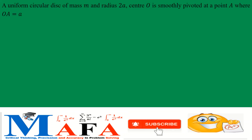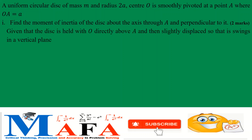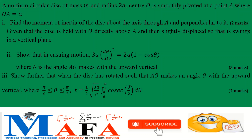The question reads: a uniform circular disk of mass m and radius 2a, center O, is smoothly pivoted at a point A where OA equals a. Find the moment of inertia of the disk about the axis through A and perpendicular to it. Given that the disk is held with O directly above A and slightly displaced so that it swings in a vertical plane, show that in the ensuing motion 3a(dθ/dt)² = 2g(1 − cosθ), where θ is the angle OA makes with the upward vertical. Show further that when the disk has rotated to angle θ, where θ lies between π/6 and π/2, the time taken is ½√(3a/g) times the integral from π/6 to π/2 of cosec(θ/2) dθ. Finally, find the reaction at the pivot when θ = π.